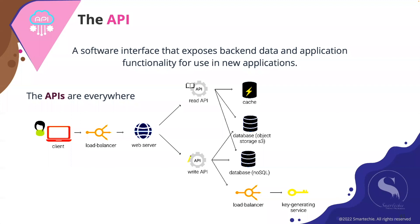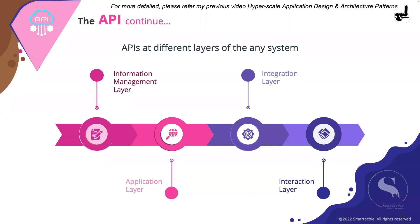These are the places where APIs can be incorporated to access other systems across the whole product. APIs can be placed at different points of the product landscape. Here are the four important and commonly used areas where APIs are really important: the information management layer, the application layer, the integration layer, and the interaction layer.